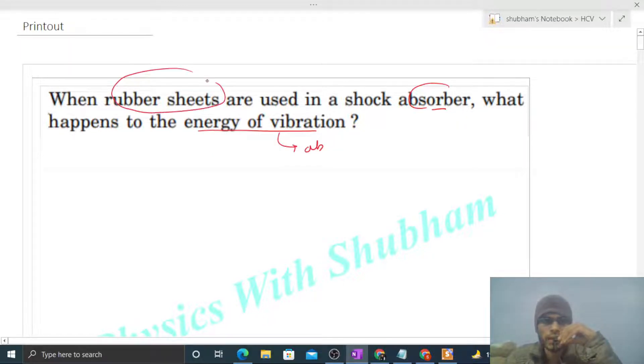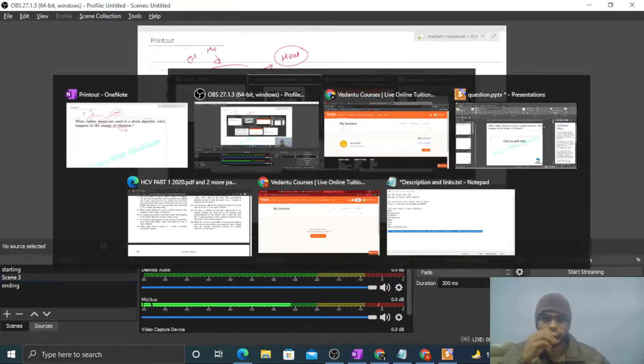The rubber sheets convert this to heat energy. So the energy of vibration converts to heat energy, and this property of rubber sheets is called elastic hysteresis. Nothing much to discuss about this.